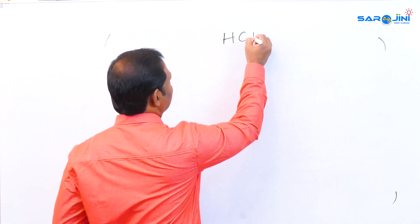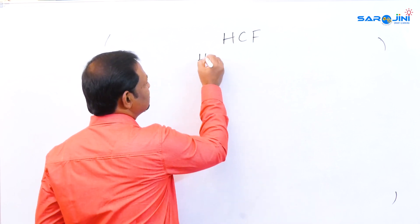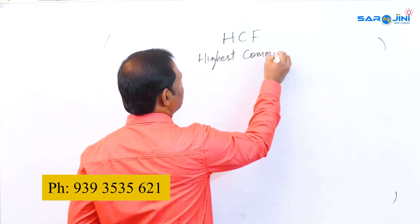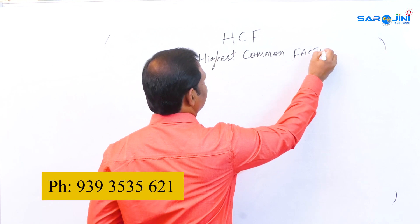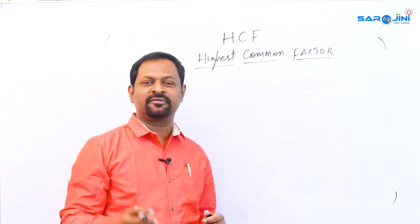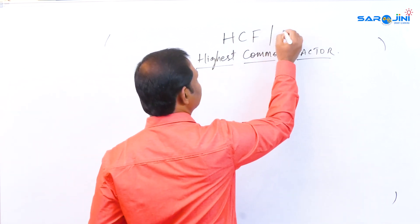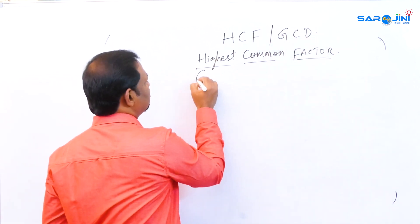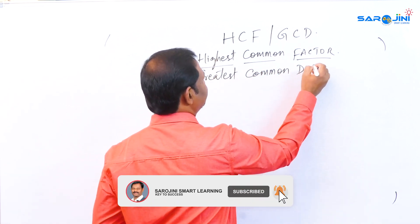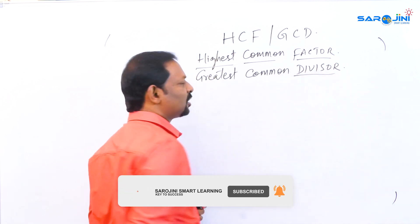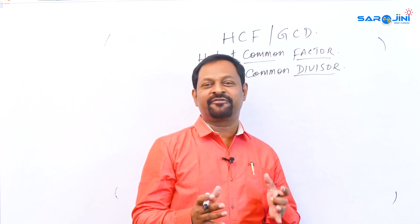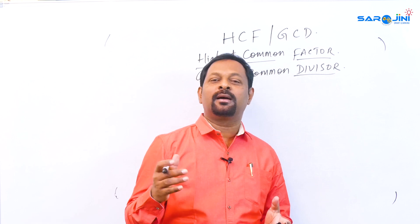HCF stands for Highest Common Factor. This can also be called GCD — Greatest Common Divisor. You can call it either GCD or HCF; HCF is nothing but Highest Common Factor.